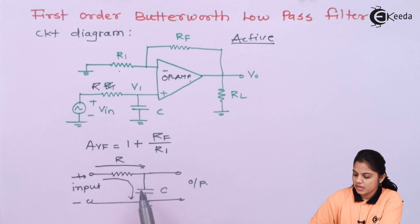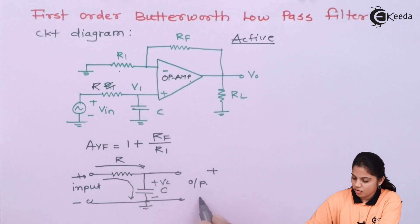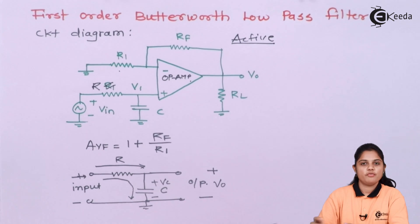And for a negative half cycle, if current is not flowing, the capacitor will discharge. So whatever is the voltage across the capacitor, for example Vc, this voltage will exactly come across the output. And that will be your V0 output.